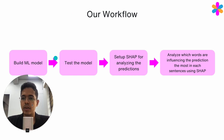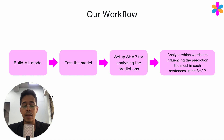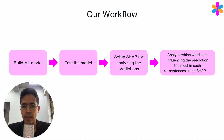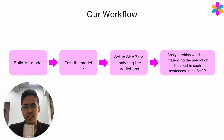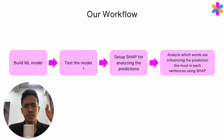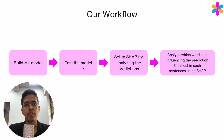Our workflow will be as follows: we will import the model — not building it from scratch, but using what is already out there. We will test the model on a few data points to see the accuracy. Then we will set up the SHAP explainer for analyzing the predictions, and we will look at which words are influencing the prediction and to what degree. Now let's go to Google Colab.